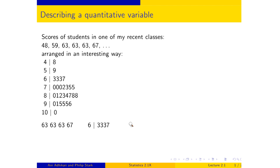Now you have a picture of the scores of the entire class. Somebody got 100 — I told you this was a graduate class, and this person was a second-year undergraduate. It's just dazzling. This picture has a fanciful name: it's called a stem and leaf plot.